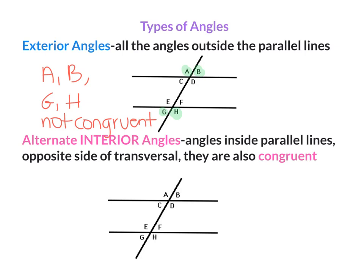Alternate Interior Angles. These are angles that are inside the parallel lines but on opposite sides of the transversal. They are also congruent. The transversal is the line that cuts the parallel lines — I'll label it T. Inside the parallel lines, angle C and its alternate interior is angle F. Angle D and its alternate interior is angle E. So angle C is congruent to angle F, and angle D is congruent to angle E.